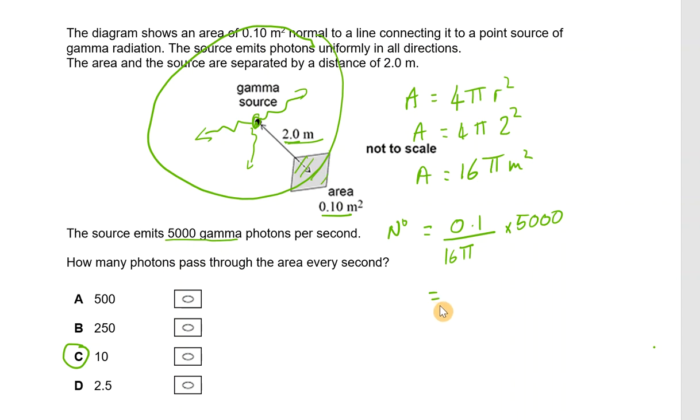And if I put that into my calculator, I will get an answer of 10 photons per second just going through that area. The answer is D.